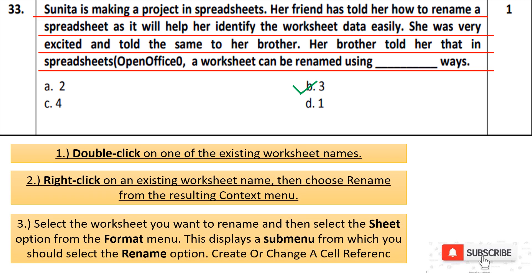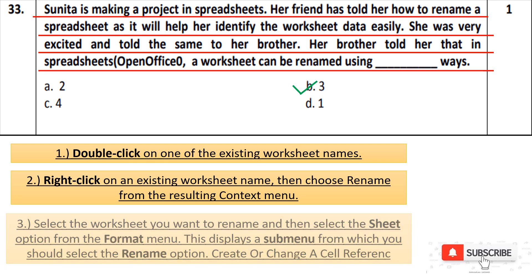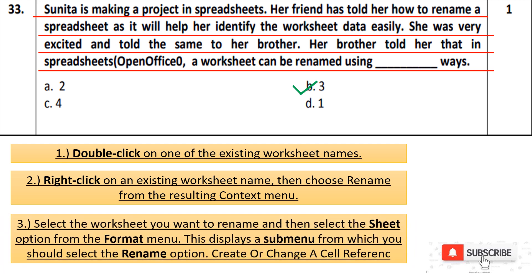Third and the last option: select your worksheet, then go to the Format menu, choose the Sheet option, open the submenu, and select the Rename option — this is a longer way to rename. So in Format menu, there is a Sheets option, and within its submenu there is a Rename option. So option number B, Three, is correct — there are three ways to rename a worksheet.